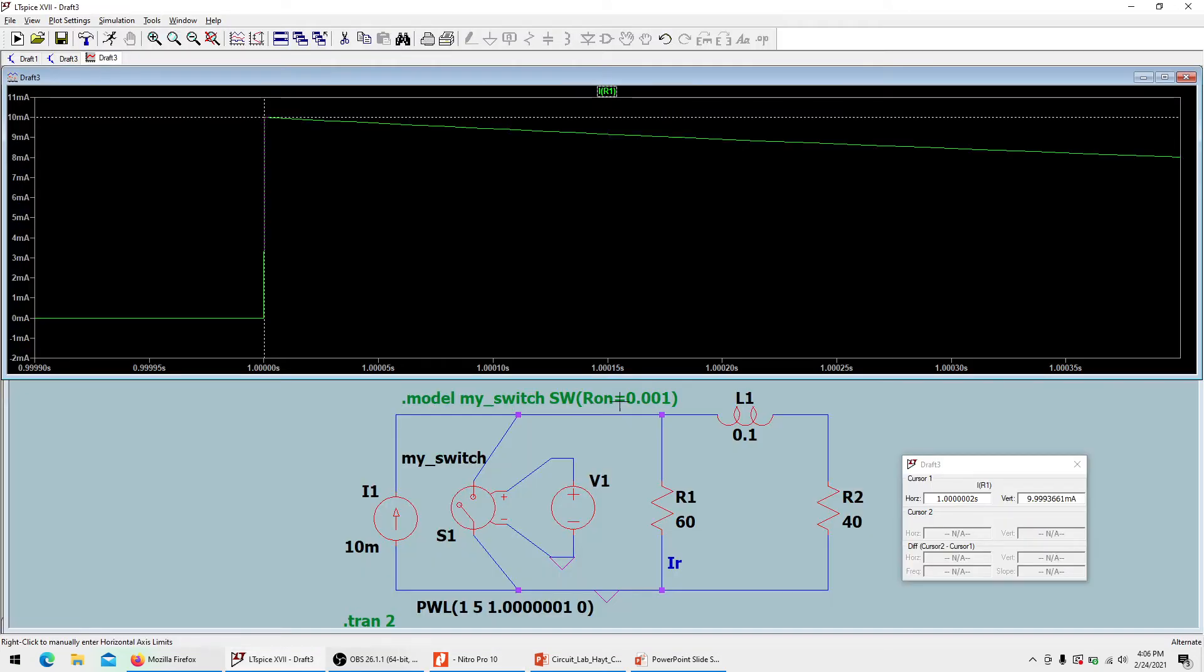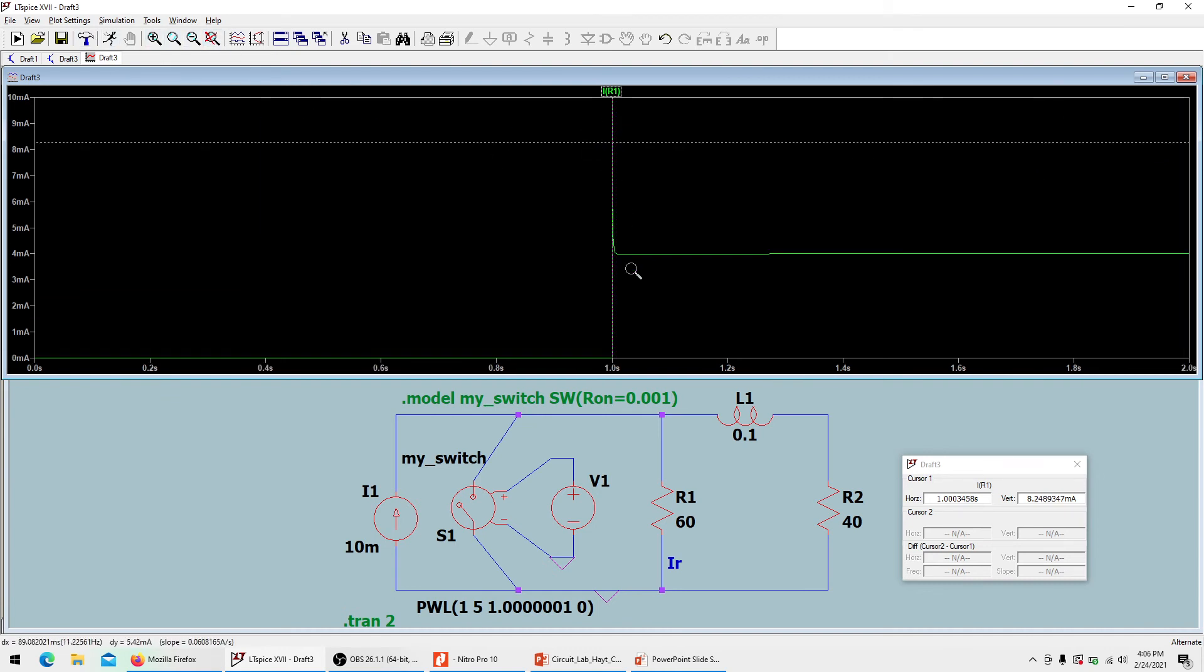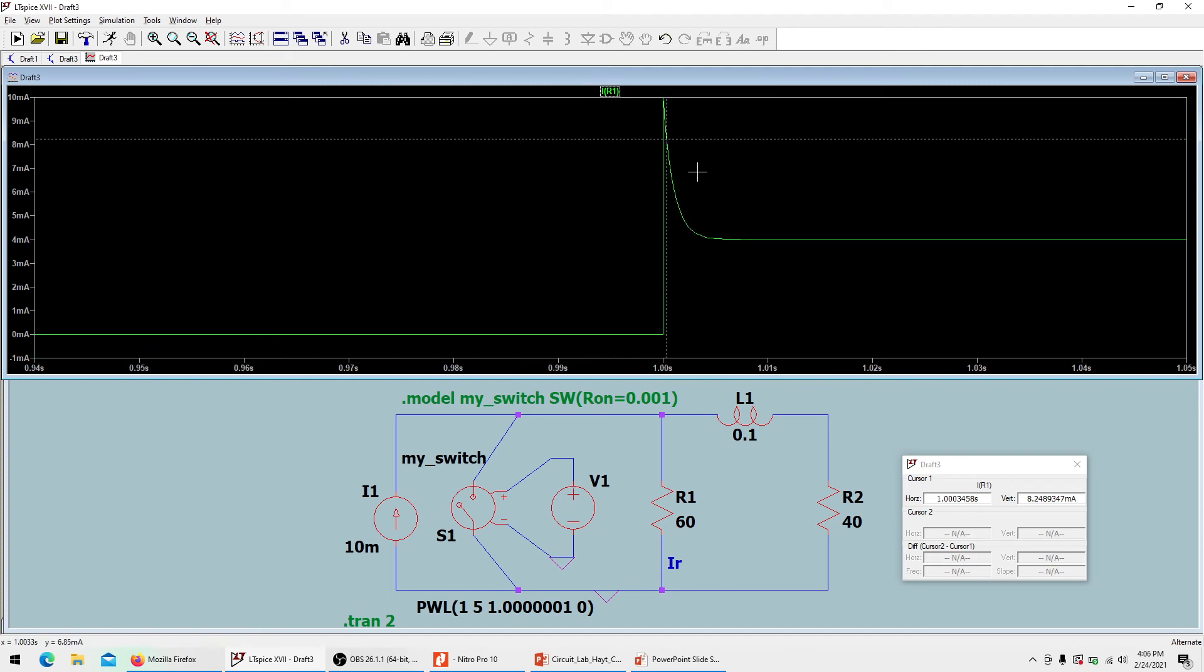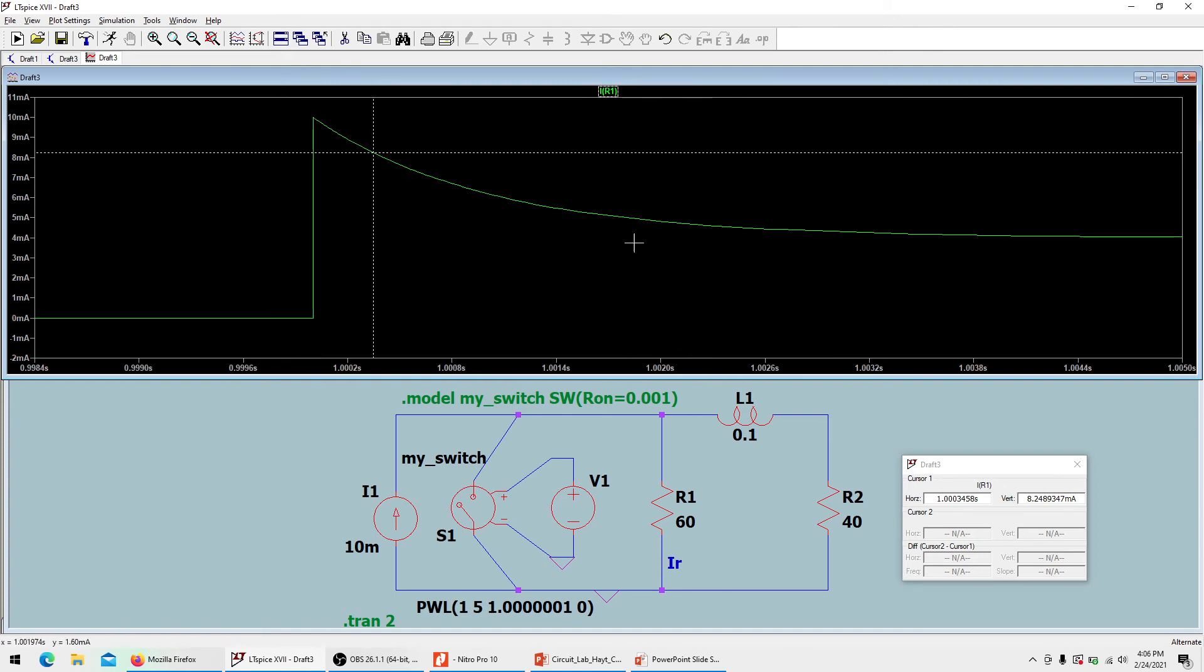The second way to do it is to choose a time. For example, in this simulation, I'll choose some point before it settles down. I'll take any value at any given time - for example, 1.0014 seconds. At that time, my current is 5.47 milliamps.